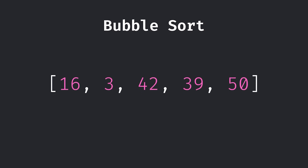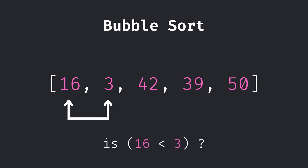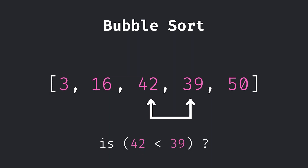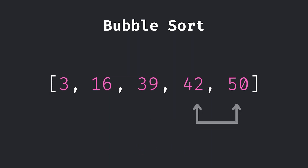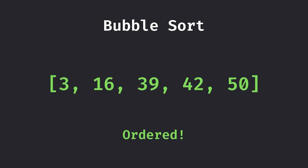Moving on to sorting algorithms, we're shown bubble sort and selection sort. Bubble sort involves looking at a data set and comparing two values at a time as you move through. If the two values are not in order, you swap them. Then you restart from the very beginning — take the next two, check them, swap if needed, and so on. You repeat this as many times as needed until you go through the whole data set and don't need to do any more swaps. Then you know that it's in perfect order.